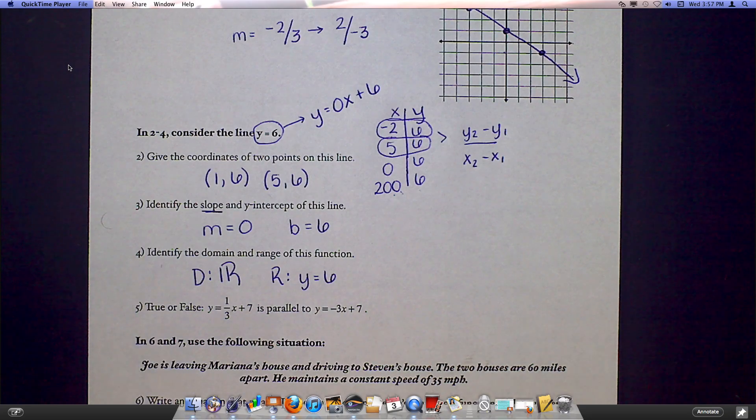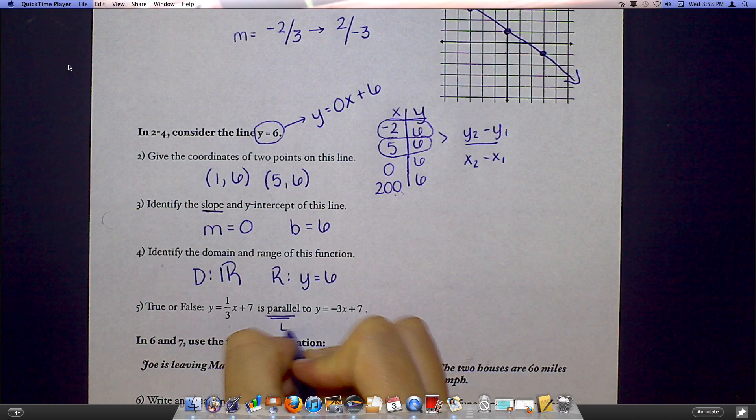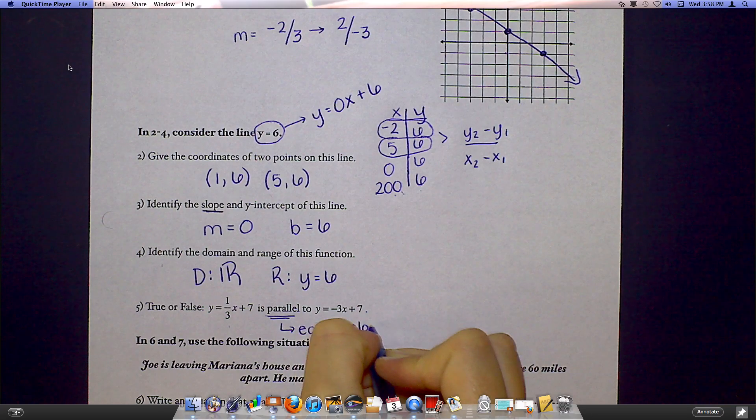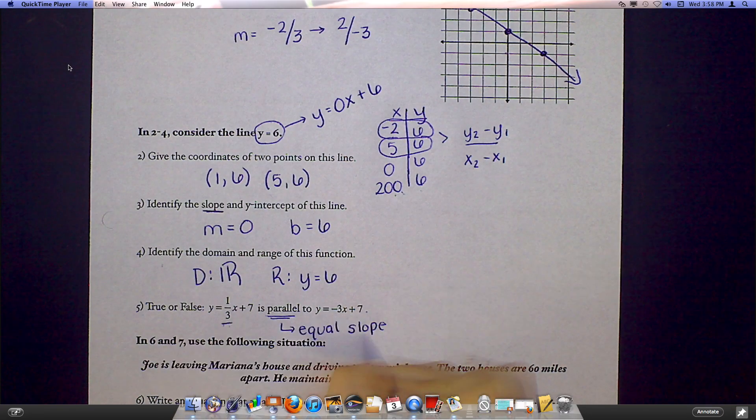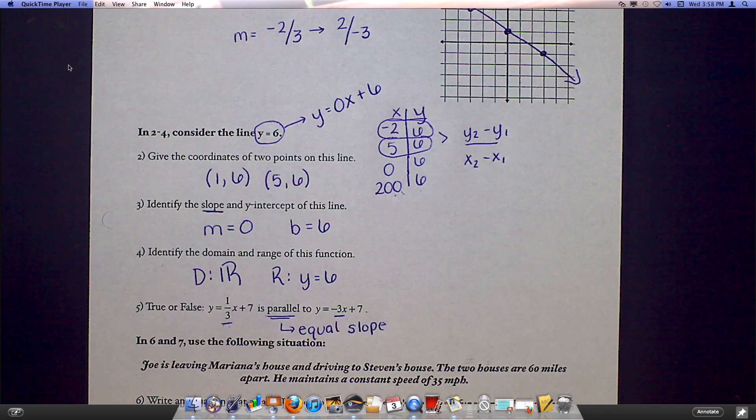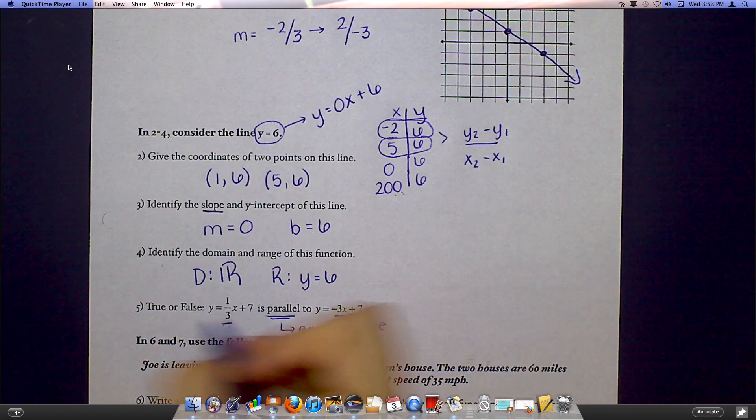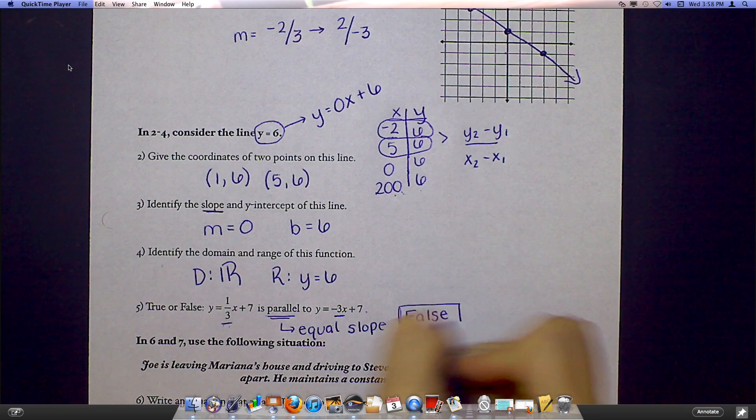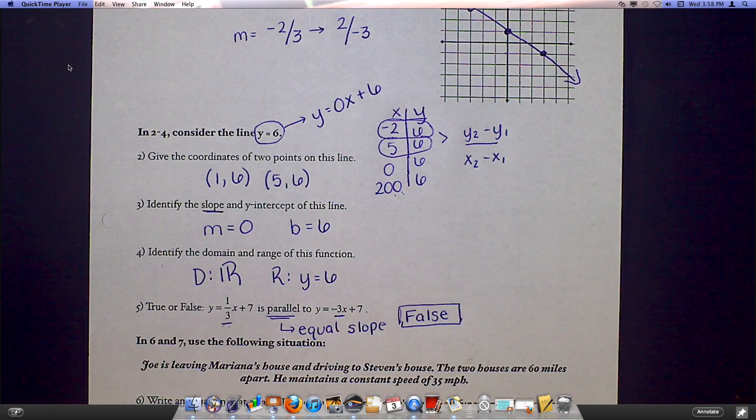And number five, again, and I think this is just confusing the way this is laid out. Number five is its own question. It doesn't have anything to do with two through four. It says true or false, this line, y equals one-third x plus seven, is parallel to this line. Well, if they were parallel, that would mean their slopes would be the same. The slope in this one is one-third. The slope in this one is negative two-thirds. Those two are not the same. So this would be false.